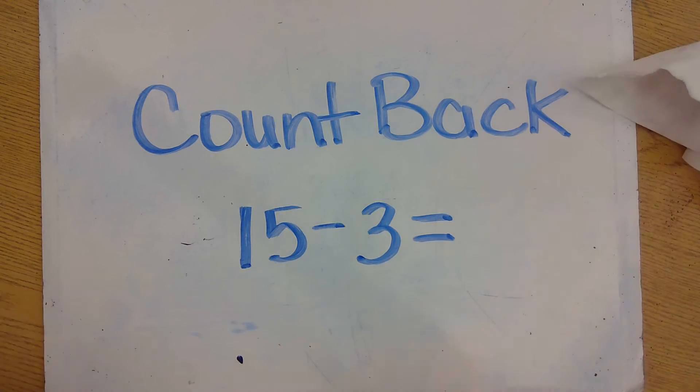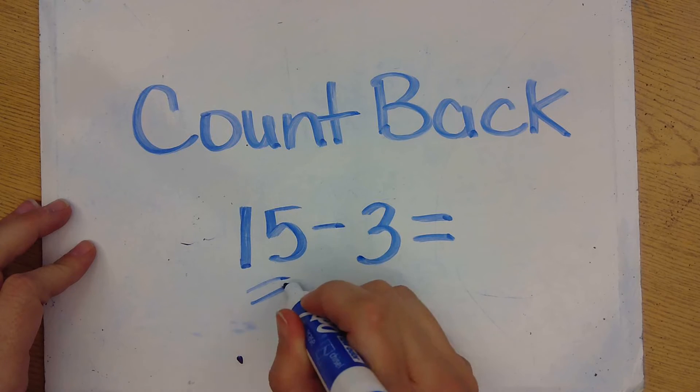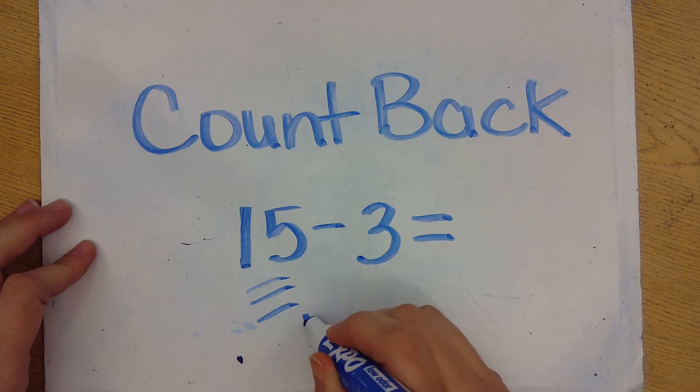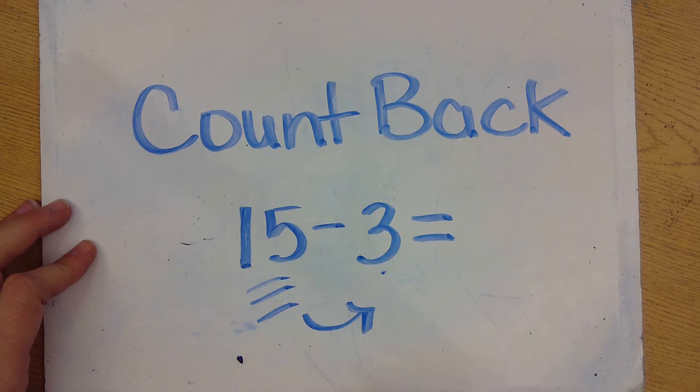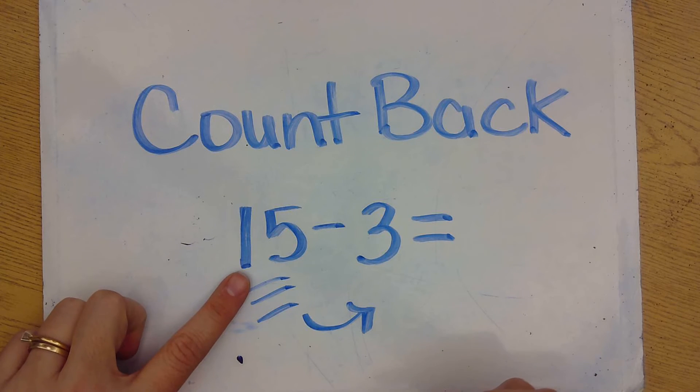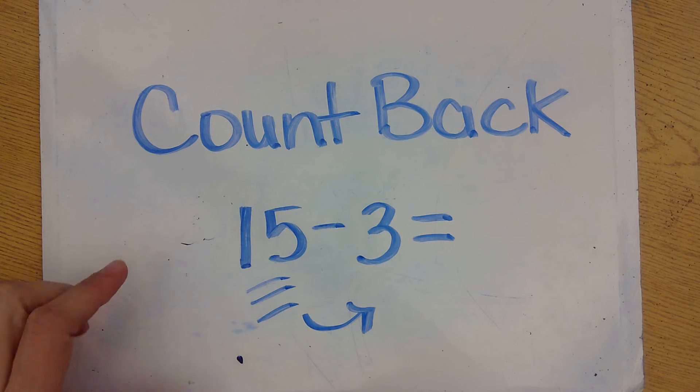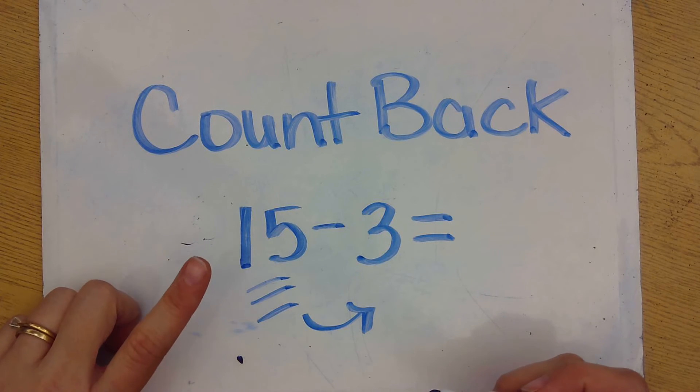So we want to do 15 take away 3, and we are going to start at 15 and go backwards 3 spaces. So help me count this, ready? Say 15, and then we will start counting using tallies back 3 spaces. So ready? Here we go.